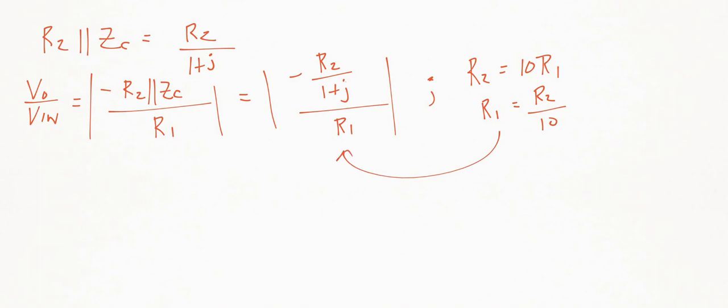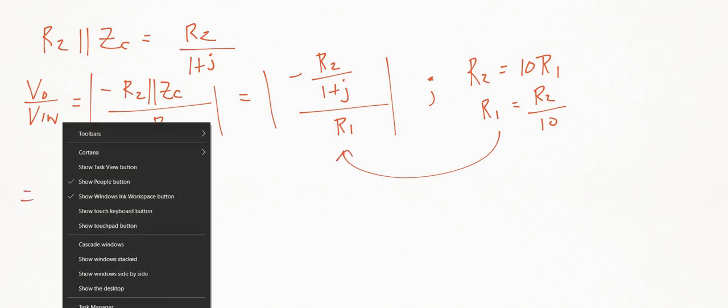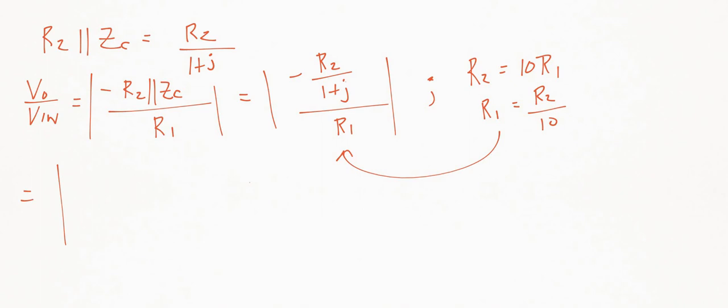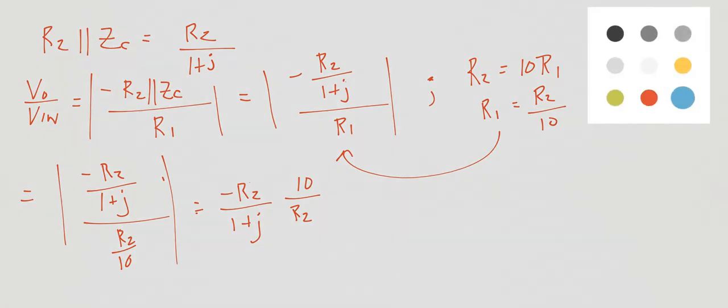And we'll have another lovely nested loop here, which will be negative R2 over 1 plus j divided by R2 over 10, absolute value. We can write this nicer: negative R2 over 1 plus j multiplied by 10 over R2, and lovely, the R2s cancel, and we get—this is absolute value—and we get negative 10 over 1 plus j, absolute value.